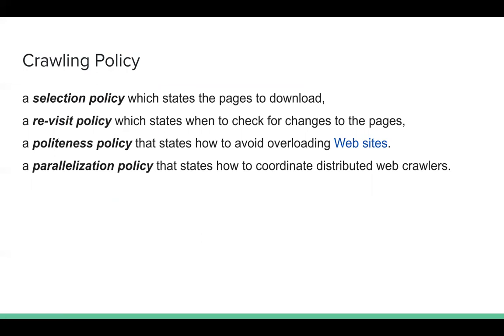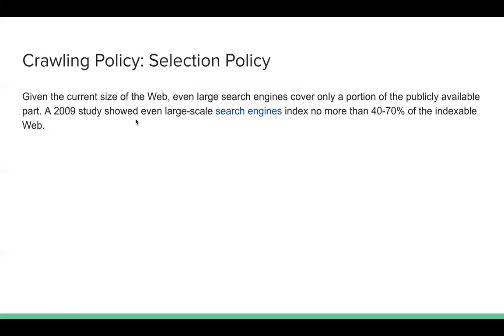For a crawler, we have four policies: a selection policy, a revisit policy, a prioritization policy, and a parallelization policy. Let's start with the selection policy.